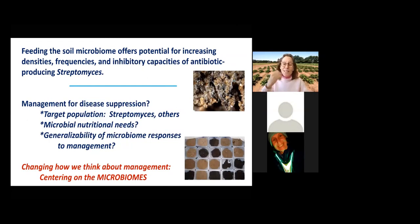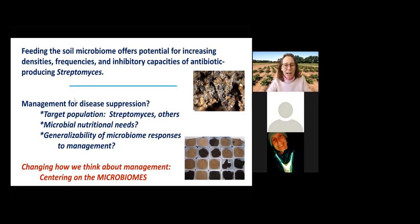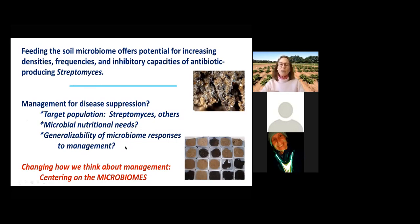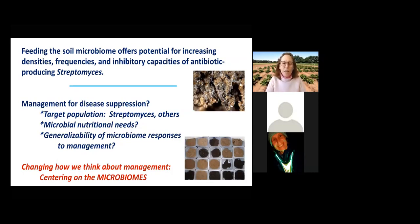Overall, disease-suppressive soils: the Pacific Northwest has a rich heritage of wonderful work from Dave Weller and Tim Pollitz and the entire group for take-all suppression. We're beginning to peel back the layers to understand how to target populations and manage them actively to achieve functional outcomes for crop production. We think microbial nutritional needs are an incredibly important and under-recognized element of soil health. Rather than thinking of managing the pathogen population or even managing the crop, how do we start thinking about managing the microbiome?